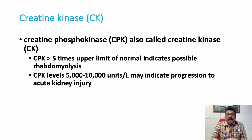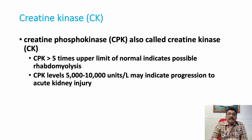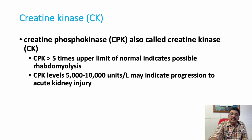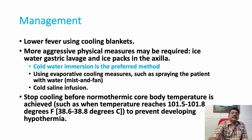Creatine kinase (CK) is an important investigation for rhabdomyolysis. CK elevated to more than five times the normal value indicates probable rhabdomyolysis. Levels of 5,000–10,000 units per liter may indicate progression to acute kidney injury, as muscle enzymes accumulate in the kidneys and cause acute kidney damage.